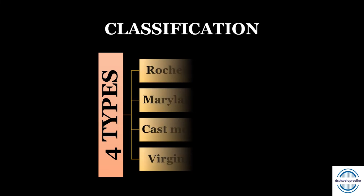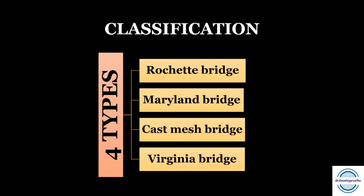The classification of resin bonded bridges includes four main types depending on the metal surface finishing technique used: the Rochette bridge, the Maryland bridge, the cast mesh bridge, and the Virginia bridge. We will discuss them one by one.